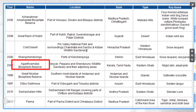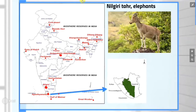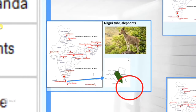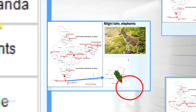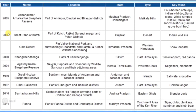Next is Agasthyamalai Biosphere Reserve. It is located in Kerala and Tamil Nadu — it shares the boundary of both states. The greenish portion shown between the two states on the map is Agasthyamalai biosphere reserve. Its key fauna are Nilgiri Tahr and Elephant.